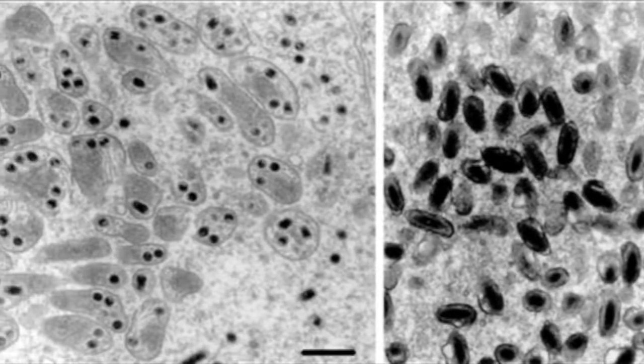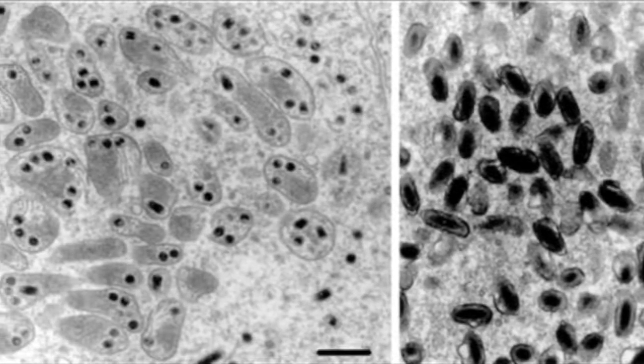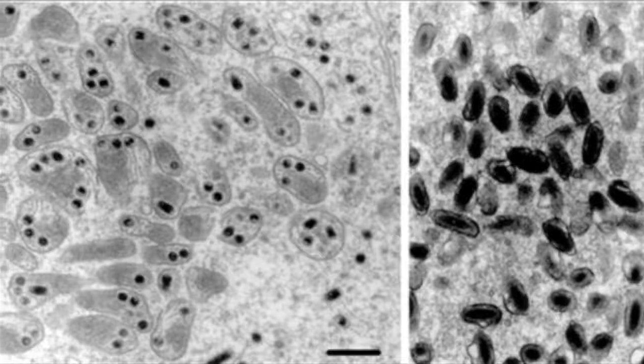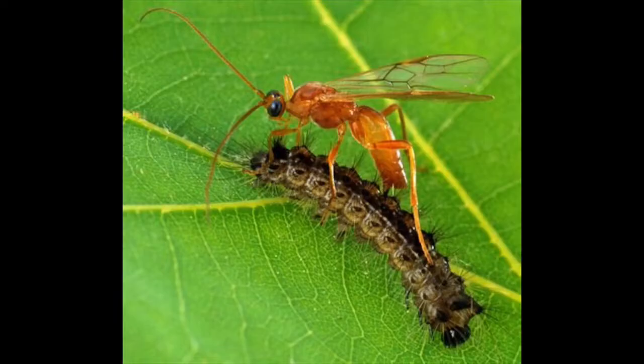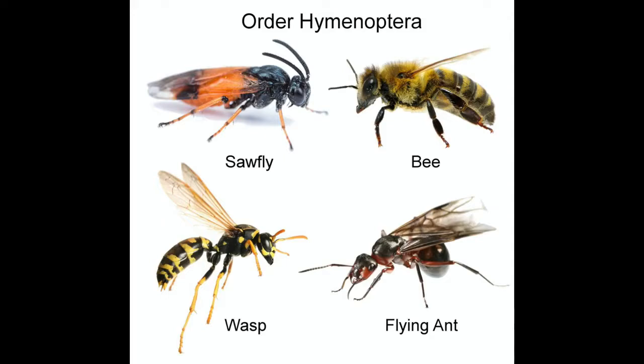The polydnavirus is a baculovirus, which is an insect virus. It has formed an intricate relationship with its host, the parasitic wasp, and this parasitic wasp is an insect in the order Hymenoptera.